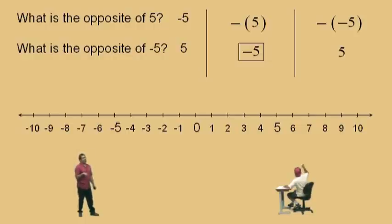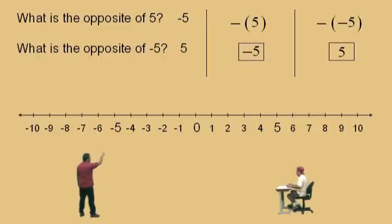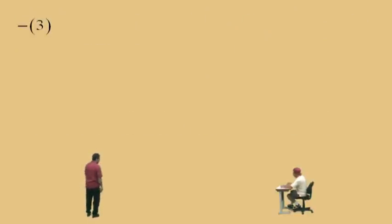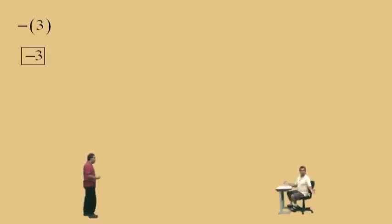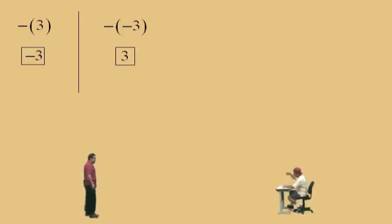We can think of it as the basis of why a negative times a negative is a positive. We'll get to that in the next video. Opposite of 5 is negative 5. The opposite of negative 5 is positive 5. Let's do some problems now. Charlie, what's the opposite of 3? Negative 3. What's the opposite of negative 3? Positive 3. You can think of this as the double negative rule — negative times negative is positive.